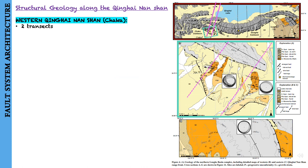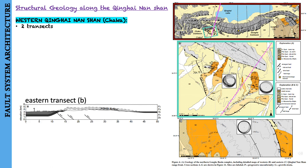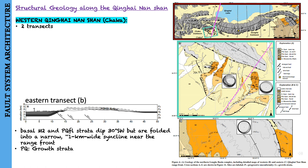In the Chaka region in the northwest part of the range, they conducted two structural transects. Along the eastern transect, the basal M2 and PQFL strata dip 30 degrees southwest but are folded into a narrow, 1 km wide syncline near the range front. Bedding dips in the mid to upper levels progressively decrease upsection, such that the highest exposed PQAL strata are nearly flat-lying.